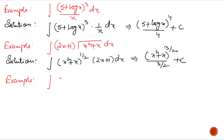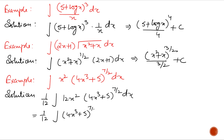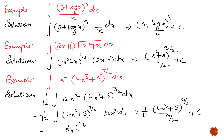Next example: integrate x² multiplied by (4x³ + 5)^(7/2). The derivative of (4x³ + 5) is 12x². So divide by 12 and multiply by 12. We get (1/12) times 12x² times (4x³ + 5)^(7/2). The function to the power 7/2 with its derivative present side by side, so the answer is (1/12) times (4x³ + 5)^(9/2) / (9/2), which simplifies to (1/54)(4x³ + 5)^(9/2) + c.